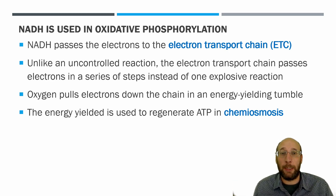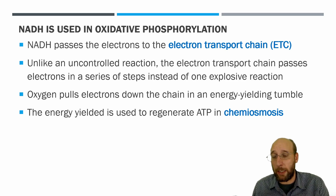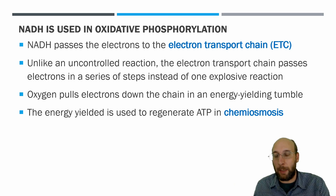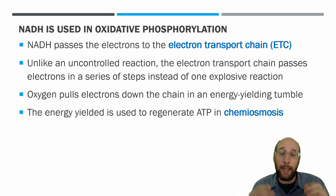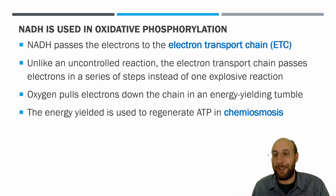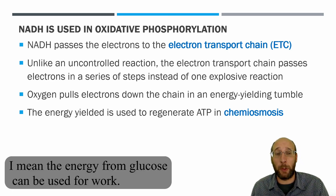NADH takes those electrons to the electron transport chain, which goes through a series of steps oxidizing and reducing different molecules, passing electrons along and releasing a little bit of energy at a time. Rather than combusting glucose and releasing all the energy at once, our cells take the energy a little at a time, allowing it to be used for doing work.